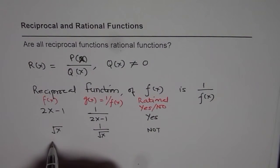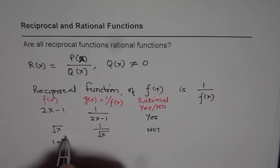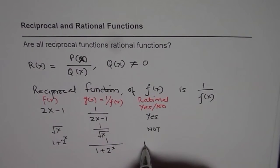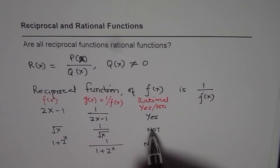Similarly, I could have 1 plus 2 to the power of X, and then the reciprocal will be 1 over 1 plus 2 to the power of X, which is not a rational function. So the answer is no for these two.